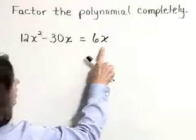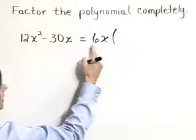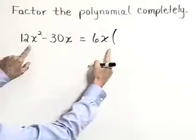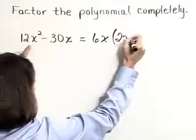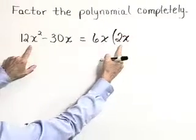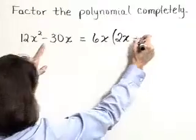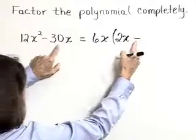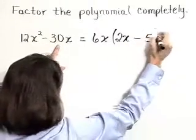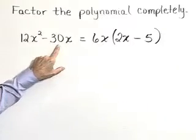So let's rewrite this in factored form then as 6x times 2x. That will give 12x squared. We need a minus sign in between. And 6x times 5 will give negative 30x.